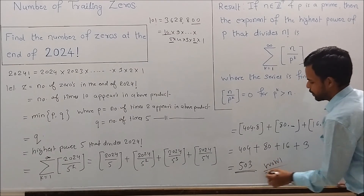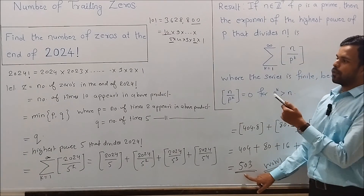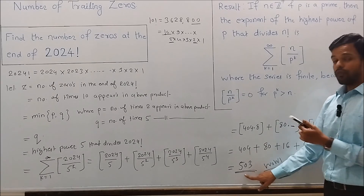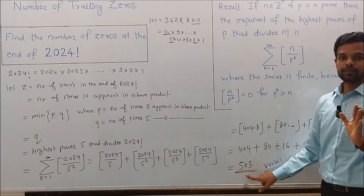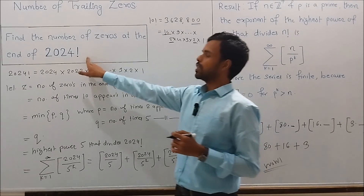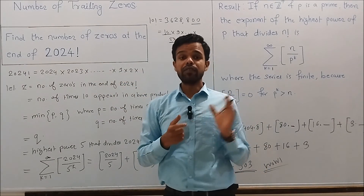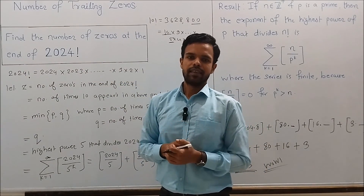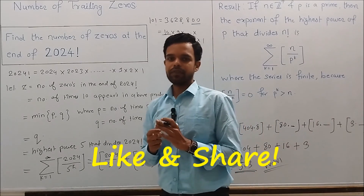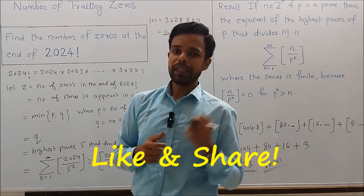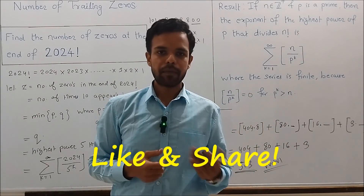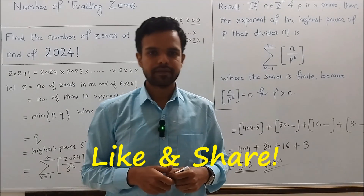Adding these up: 404 + 80 + 16 + 3 = 503. So 2024 factorial ends with 503 zeros — there are 503 trailing zeros at the end of 2024 factorial. If you enjoyed this video and found it interesting, please like and share it and subscribe to our YouTube channel. Thank you for watching.